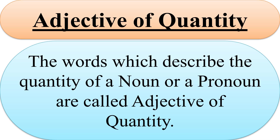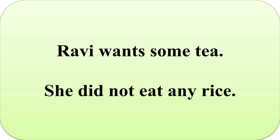Number two: Adjective of quantity. The words which describe the quantity of a noun or a pronoun are called Adjectives of quantity. For example: 'Ravi drank some tea' and 'She did not eat any rice.' The words 'some' and 'any' describe the quantity of the nouns 'tea' and 'rice'. So, they are Adjectives of quantity.